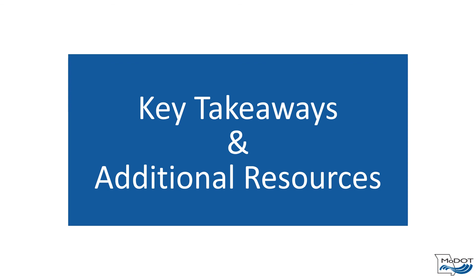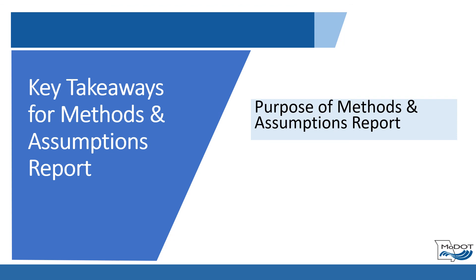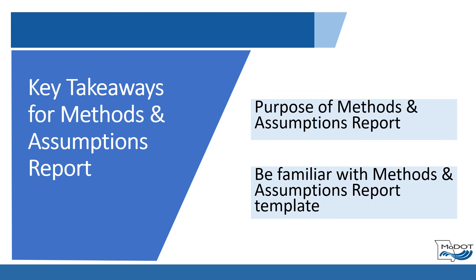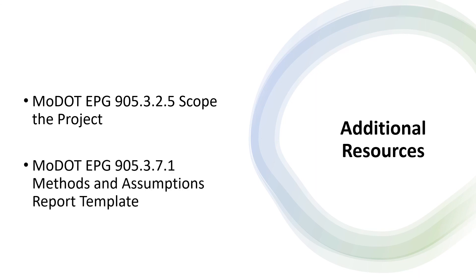Now let's discuss key takeaways and additional resources. Key takeaways for this module include the purpose of the TIA Methods and Assumptions report, and make sure to become familiar with the TIA Methods and Assumptions Report Template. Resources that provide additional general guidance include EPG 905.3.2.5 of the MoDOT EPG and the TIA Methods and Assumptions Report Template available at EPG 905.3.7.1.